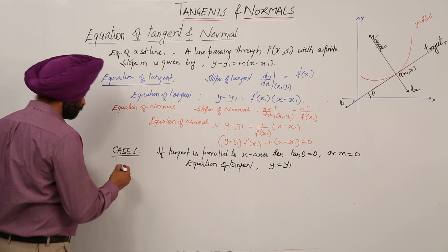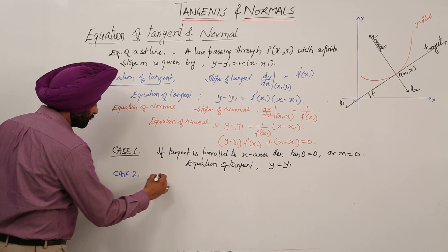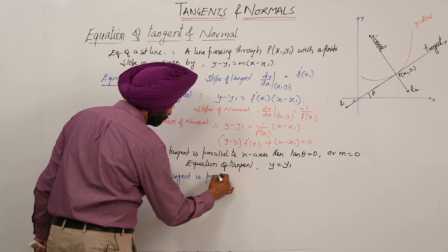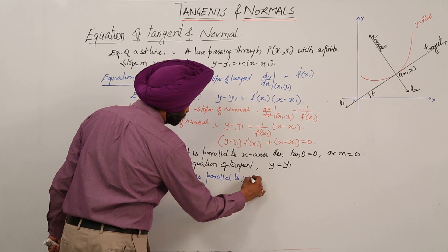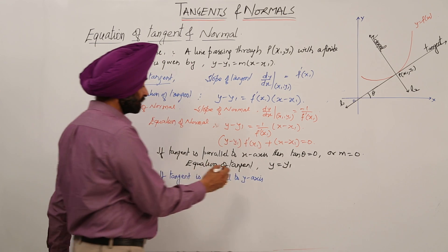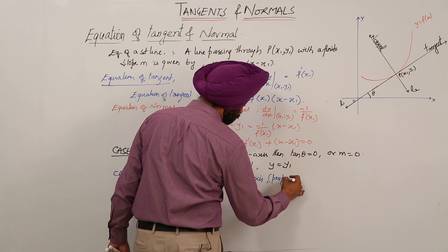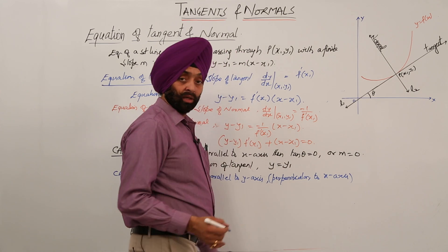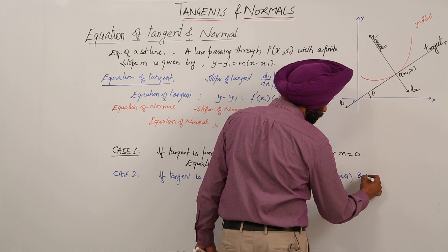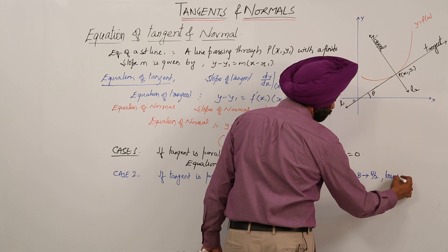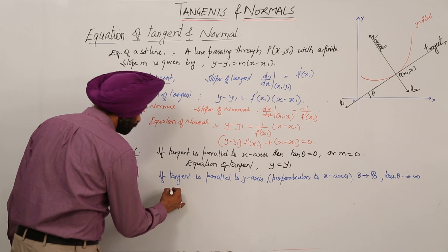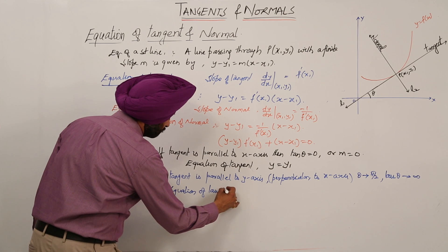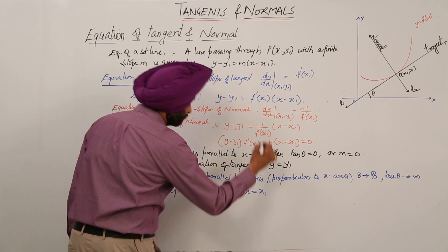Number 2: if tangent is parallel to Y-axis, tangent is parallel to Y-axis, perpendicular to X-axis. Here, what we have? Then we have theta approaches pi by 2, or tan theta approaches infinity.